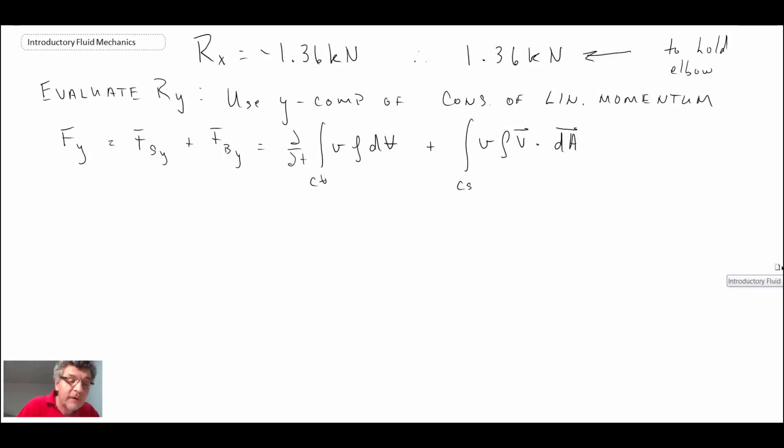The net result is the first term here, we can say P atmosphere balances. Now, body force - there is a body force in the Y direction due to the mass of the fluid and the gravity vector. But they did not give us any details about the volume, so unknown volume. Therefore, we're going to neglect that. We're not given information, so we can't solve for that. So those two go away.